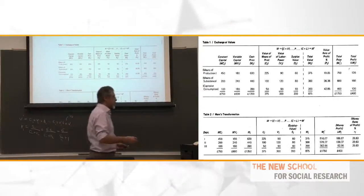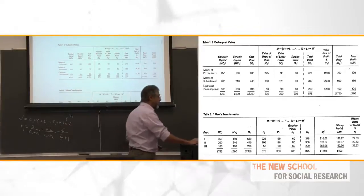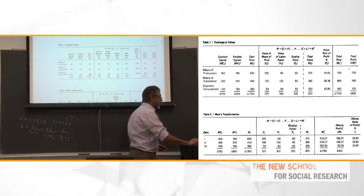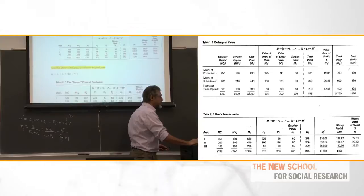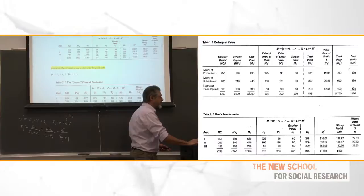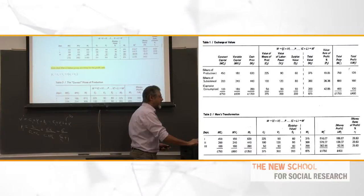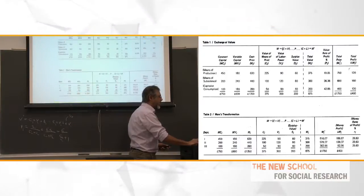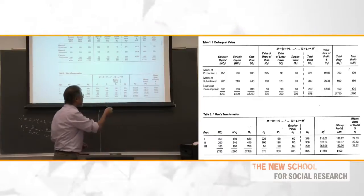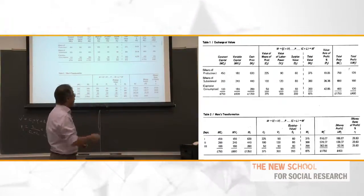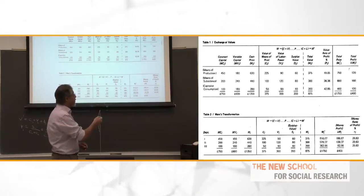Then the question is, how does Marx handle this? Marx says they're unequal, so the first thing that has to happen is that prices have to move away from proportionality to labor time. Here are the prices in the beginning — $750, $600, $400. But the first sector has a profit rate below the average, so its price must go up.